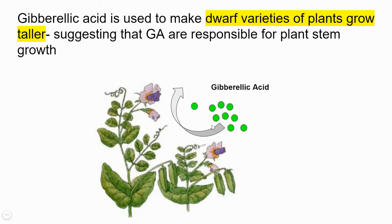We can conclude with scientific proof that gibberellic acids are responsible for plant stem growth. The reason they are called gibberellic is because the discovery of this hormone was first made in a fungus.